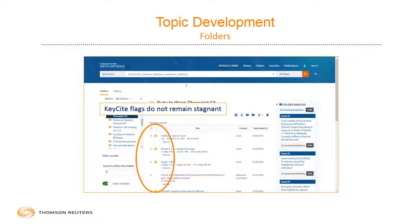KeyCite flags in a folder do not remain stagnant — and this is huge. One of the cases on the screen is from the California mid-level appeals court. If that case got reversed next week, that flag would change automatically to red. On Westlaw, you do not need to go to a folder, open an item, only to find it has changed from a yellow to a red flag. We do that work for you automatically.